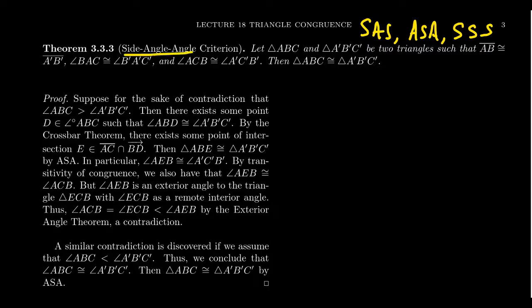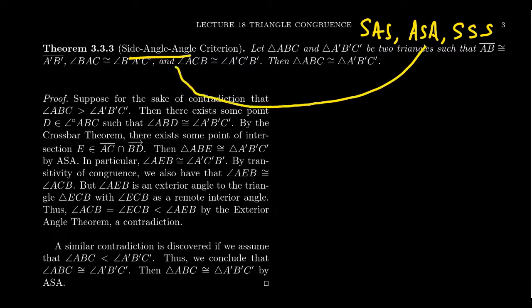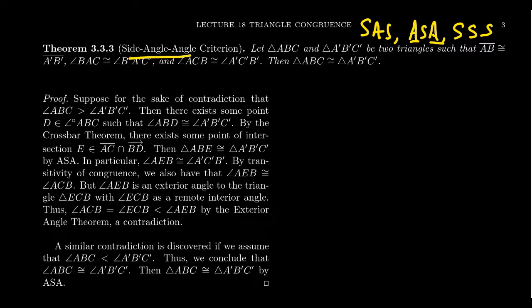It is very tempting to say that side-angle-angle follows immediately from angle-side-angle. The difference, of course, is the location of the side. We have two congruent angles, and triangles have three angles — the question is whether the congruent side is between the two angles or exterior to the two angles, and that does make a difference.